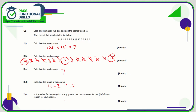Part E is a bit of a confusing question, but look at the context. Leah and Roma are rolling two dice and adding the scores together. The minimum they could roll would be 2 — if both landed on a 1. The maximum would be two 6s, which is 12. So the greatest possible range is 12 take away 2, which is 10. We got 10 for part D, so no, it's not possible to get a greater answer than our answer in D.